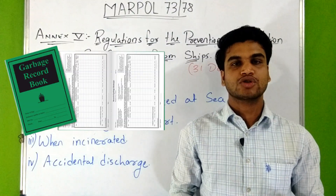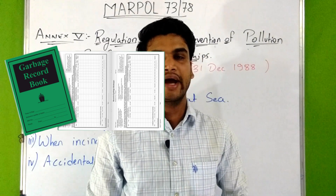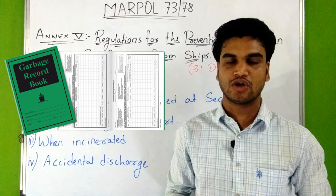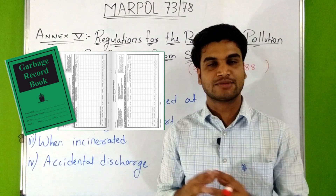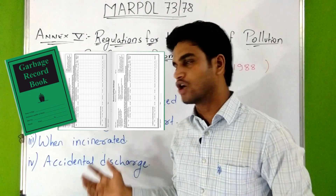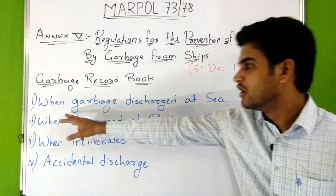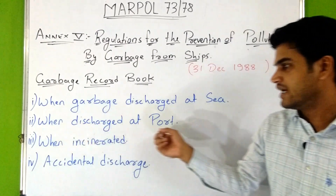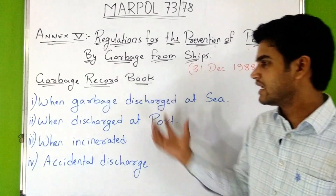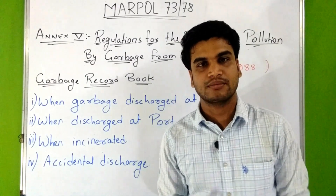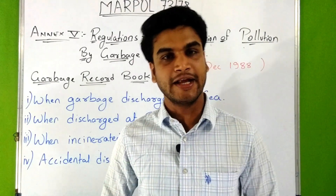Now let's discuss the garbage record book. According to Regulation 9 of this Annex, all ships of 400 gross tonnage and above, all ships certified to carry 15 or more persons on board, and all fixed and floating platforms engaged in exploration or exploitation of the seabed must carry a garbage record book. Entries must be made when garbage is discharged at sea, discharged at port, incinerated, or in the case of accidental discharge. This record book must be kept on board for 2 years after the last entry.